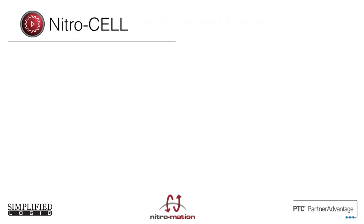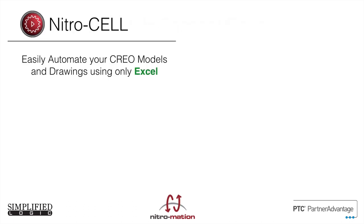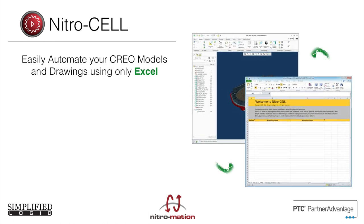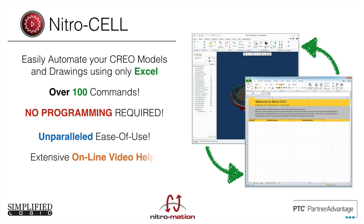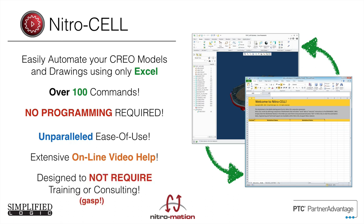One of the products that we really spend a lot of time on is Nitrocell. Nitrocell is a tool designed specifically to help you automate your Creo models and drawings using only Excel. It is packed full of functionality with over 100 commands, and we're adding more all the time, including more videos and use cases. There is no programming required to use this tool. You can simply download it and put it to use right away. We have also included extensive online video help for each function within it, and it was specifically designed not to require you to go to training or bring in consulting, so it is a download and go application.